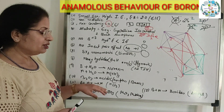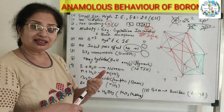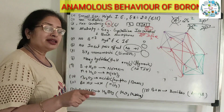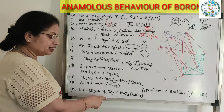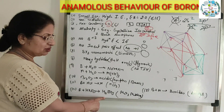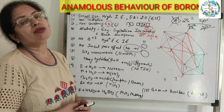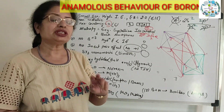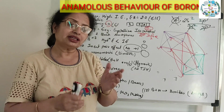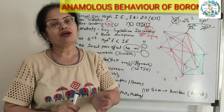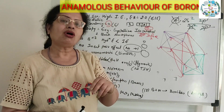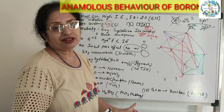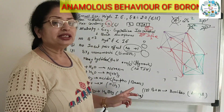Boron does not react with non-oxidizing acids like HCl, while the other elements react to form MCl₃. Boron will react with nitric acid to form boric acid and gets oxidized. The rest of the elements, like aluminum, form an oxide layer — for example, aluminum oxide forms a protective layer which adheres to the surface, stops the reaction, and makes the metal passive.